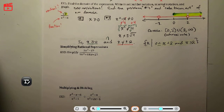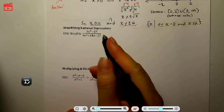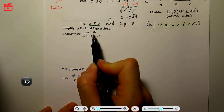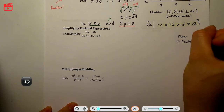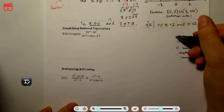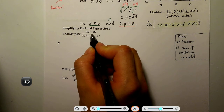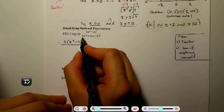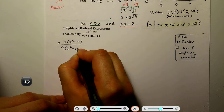Now let's move on to simplifying rational expressions. Example two: we have a fraction with a binomial on top and a trinomial on the bottom. The plan is to factor the top and the bottom and see if anything cancels.